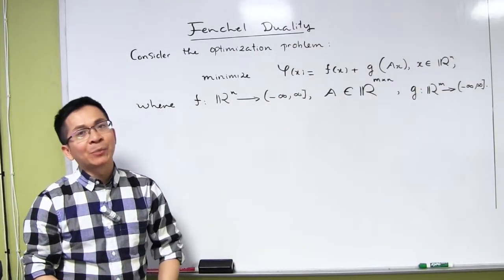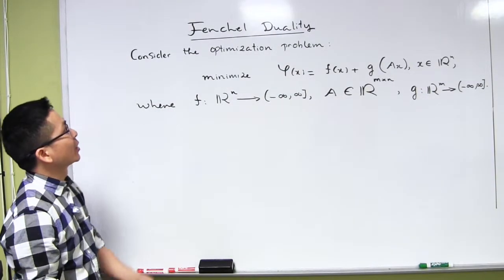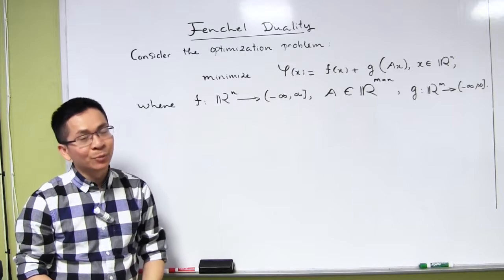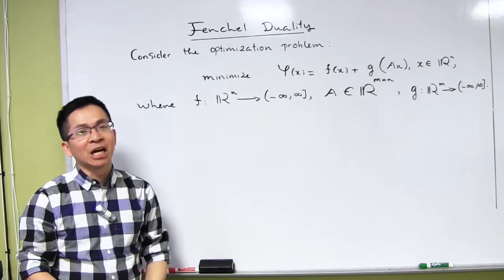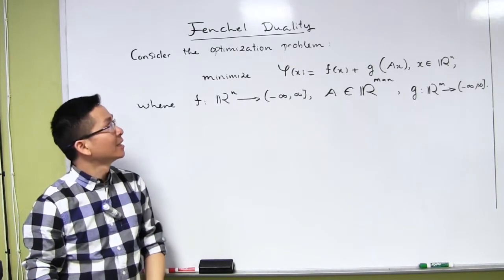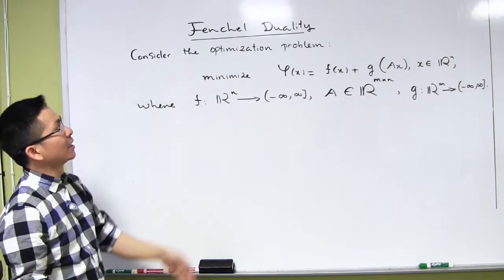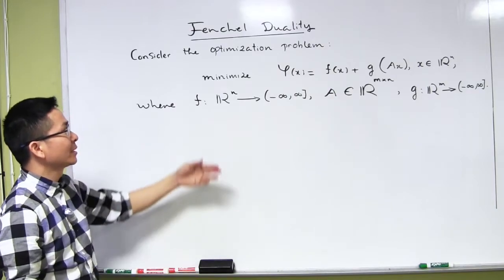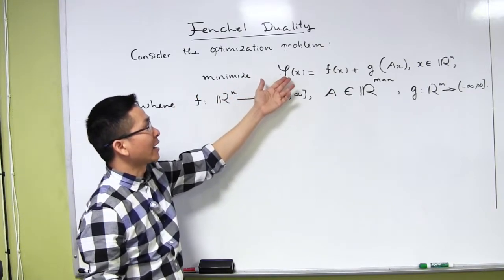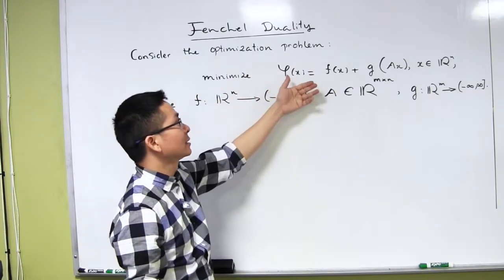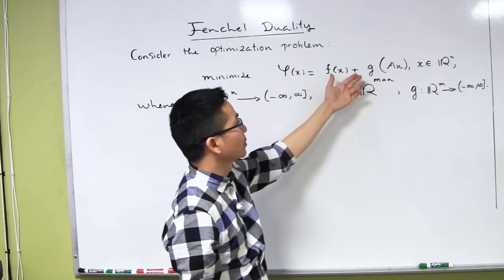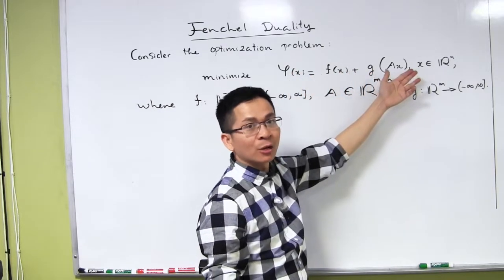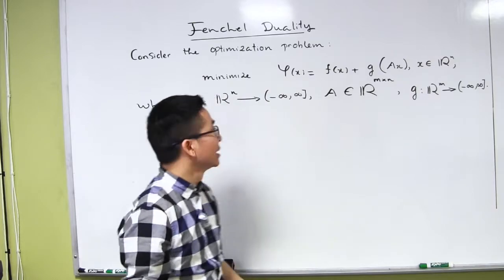In today's lecture, I'm going to talk about Fenchel duality. This is a very important topic in optimization. We consider the following optimization problem: minimize φ of x, which is f of x plus g of Ax, where x runs in R^n.